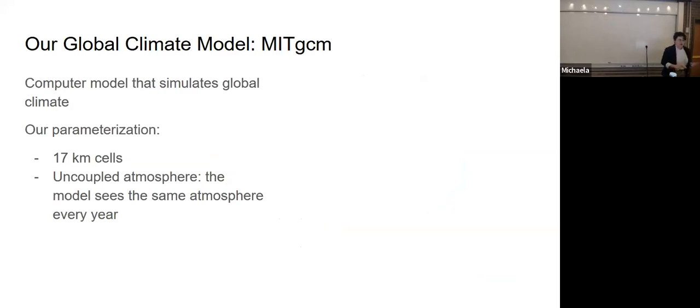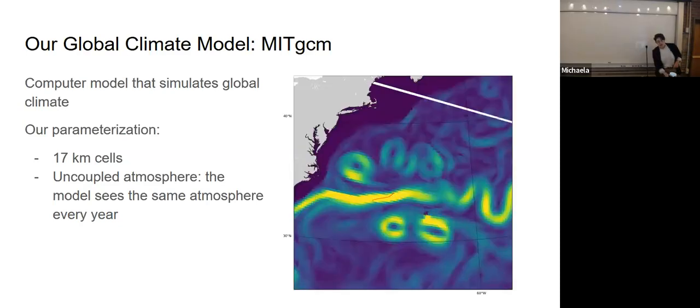Our global climate model is called MIT GCM. It's MIT's in-house global climate model. It's a very high-resolution model. For the most part, when we talk about global climate models, we're thinking about grid cells on the size of a degree or two. MIT GCM's grid cells are about 17 kilometers on a side. It's really computationally intensive. This is the Atlantic Ocean. That's Cape Cod. And this is the Gulf Stream. You can see how fine scale the grid is in this model.